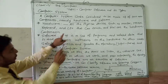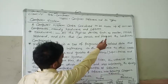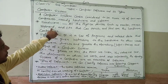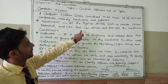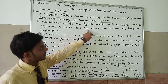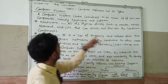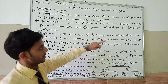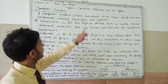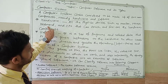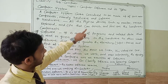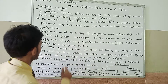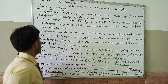The hardware — all the physical devices such as monitor, mouse, keyboard, and CPU that you can touch and feel — are the hardware components. This is very important for your computer system.